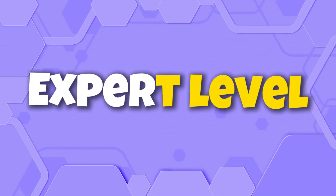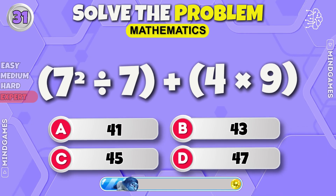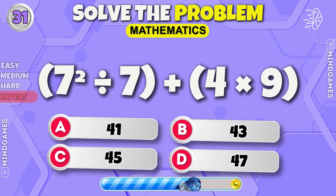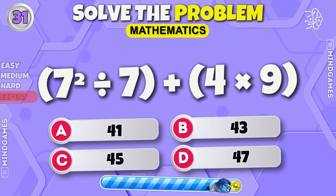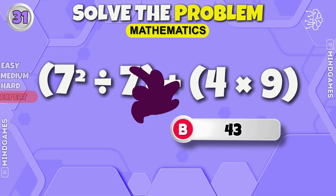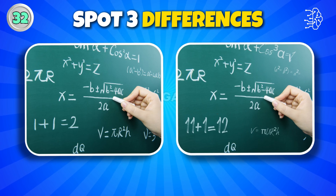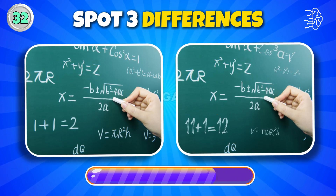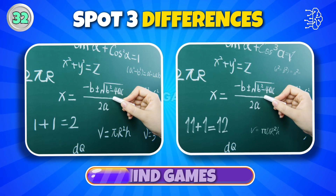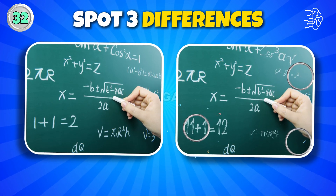Expert level. It is hard. The answer is 43. Can you spot three differences? Very tough, isn't it? 1, 2, 3 — how many did you spot?